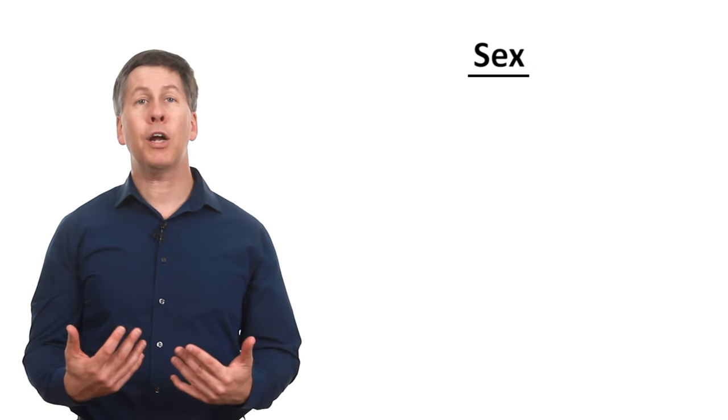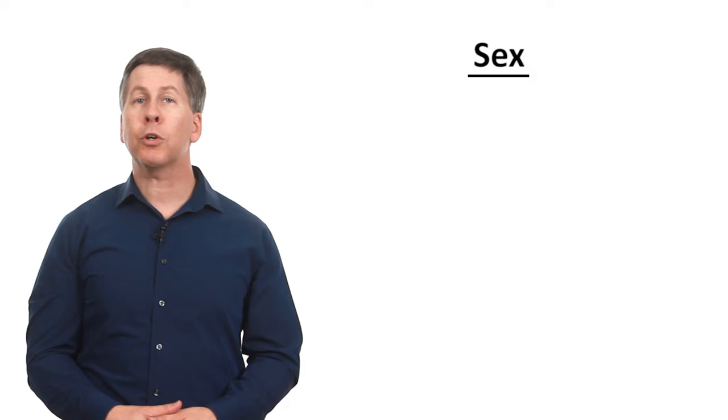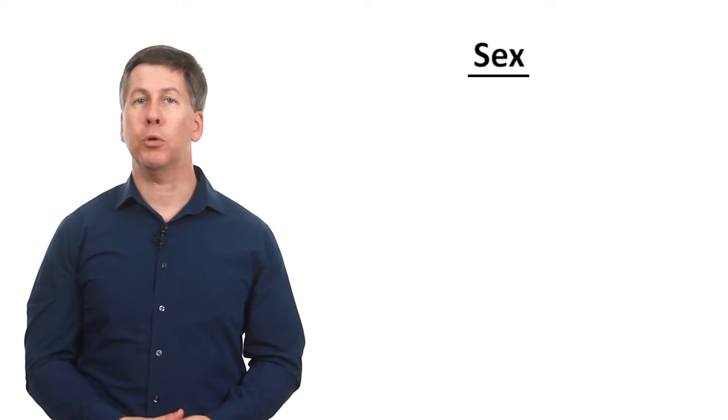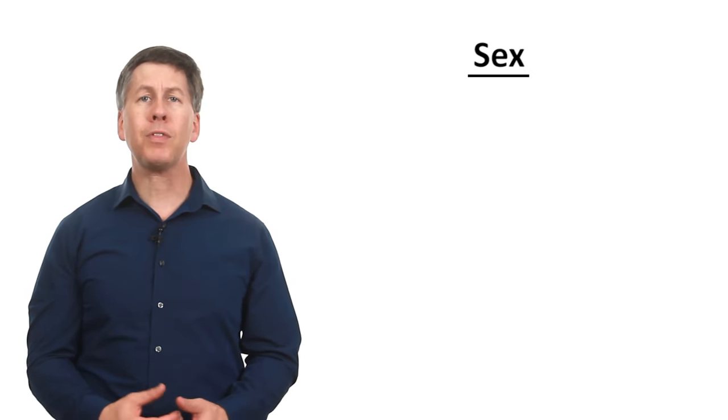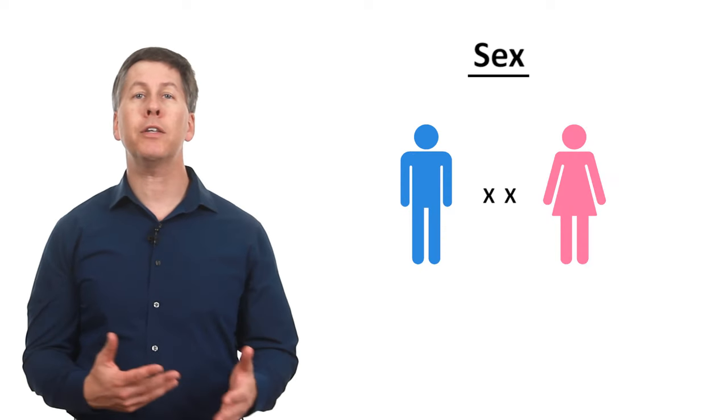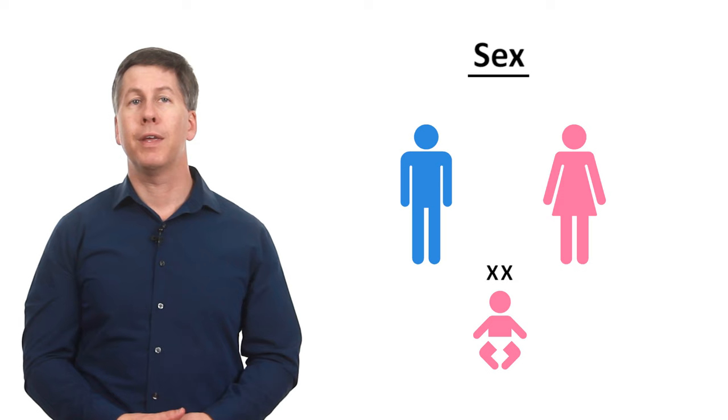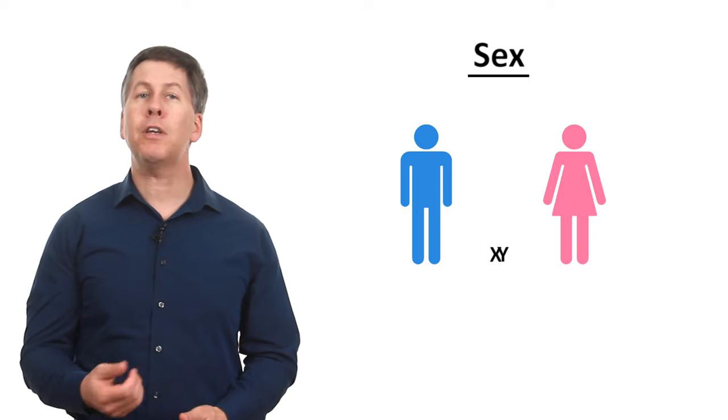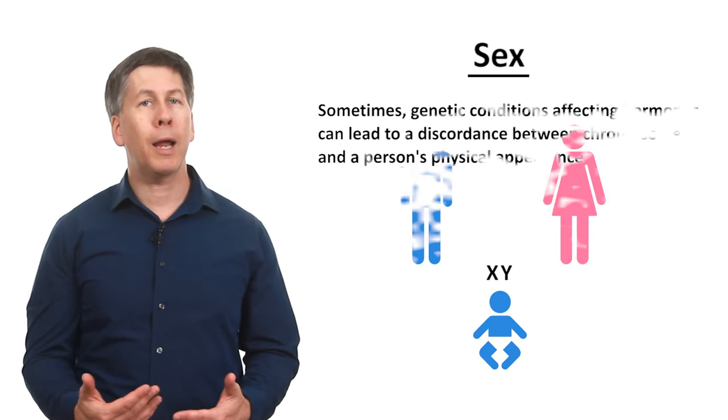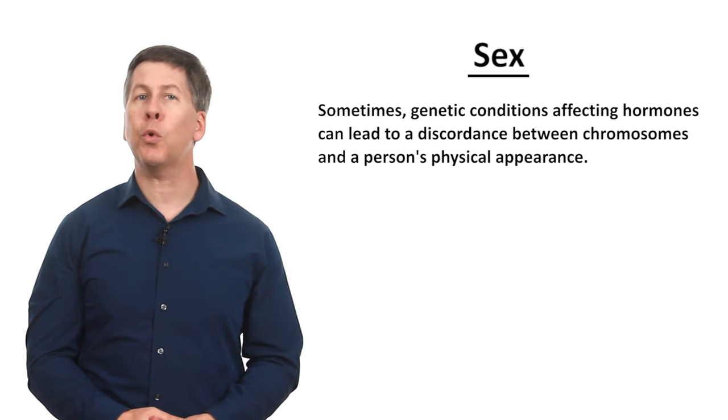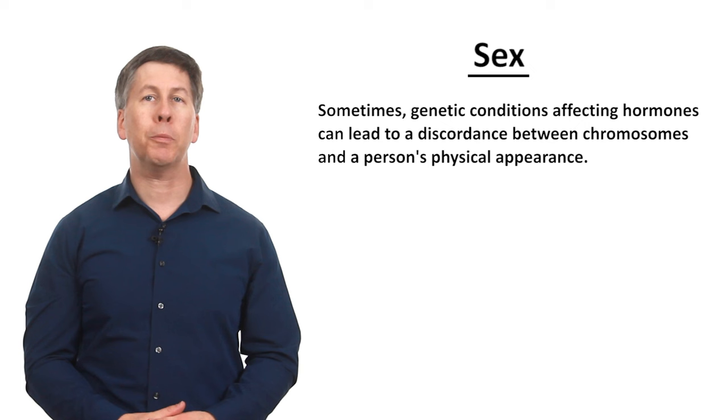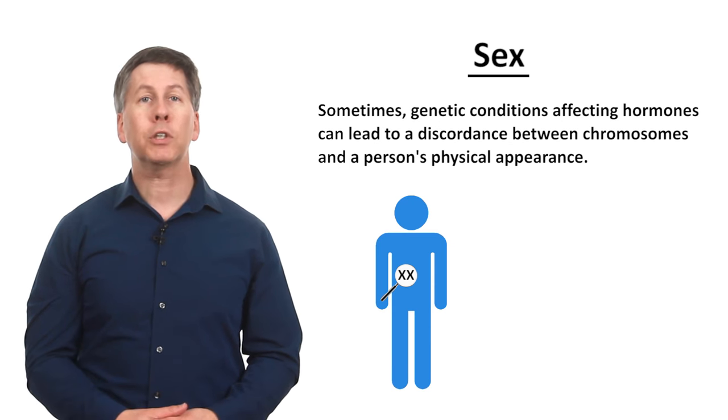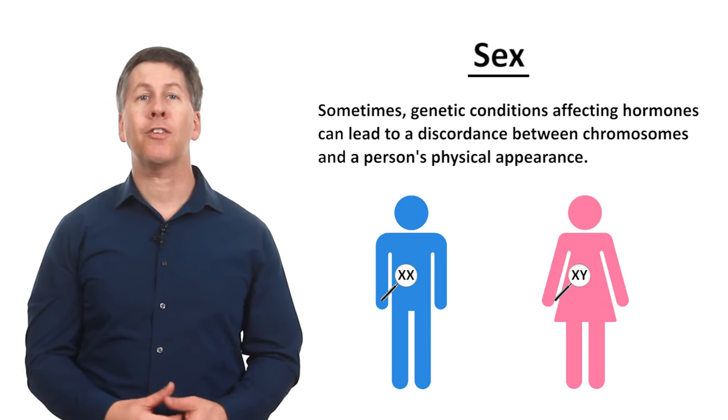Our chromosomes add yet another layer of complexity. You've probably learned in high school biology that human cells have 23 pairs of chromosomes, one of which are the so-called sex chromosomes, because they determine our sex. If an embryo inherits one X chromosome from each parent, they will typically develop into a female. If, on the other hand, an embryo inherits an X chromosome from their mother and a Y chromosome from their father, they will typically develop into a male. But sometimes, genetic conditions affecting hormones can lead to discordance between chromosomes and a person's physical appearance. A person's cells could be XX, yet the person is anatomically male, while another person's cells could be XY, yet they are anatomically female.